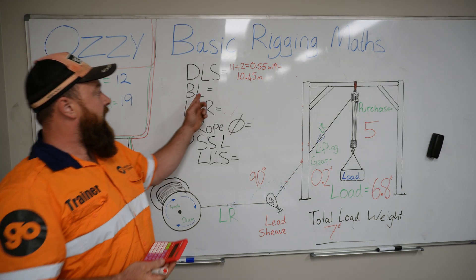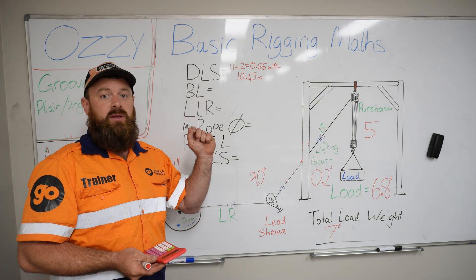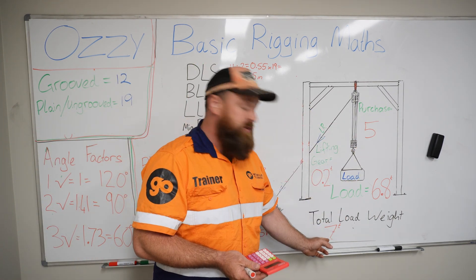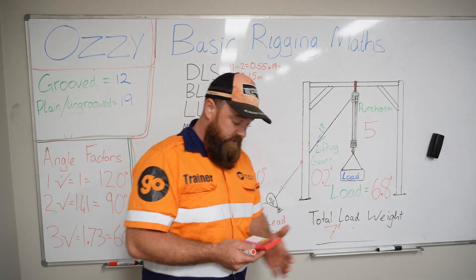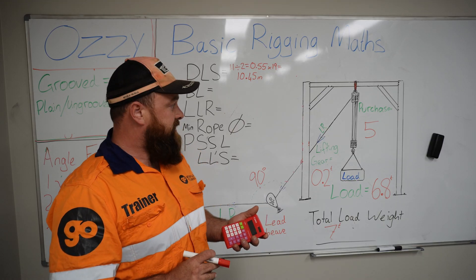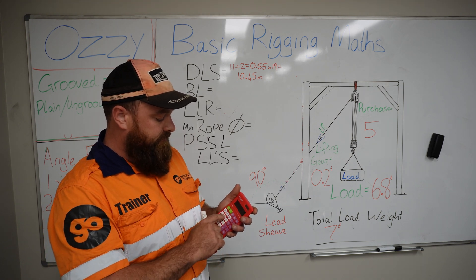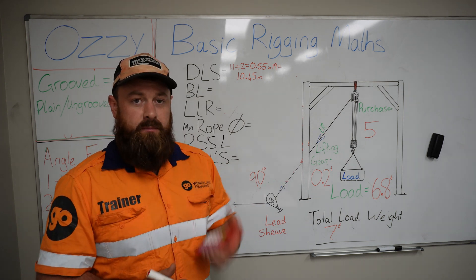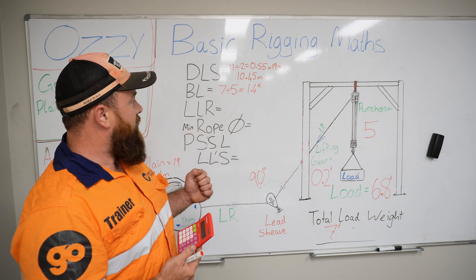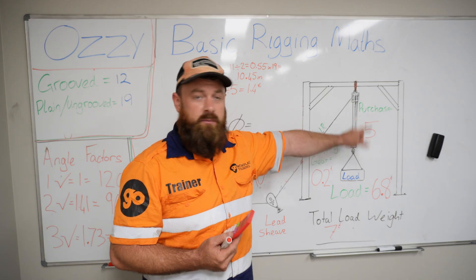We need to find out our Beckett load — for more information on Beckett load, please see the other video. We have a purchase of 5, and our total load weight is 7 tonnes. We divide 7 tonnes by the number of lines in our purchase: 7 divided by 5 equals 1.4. That means there is 1.4 tonnes of weight in each line in the Beckett.